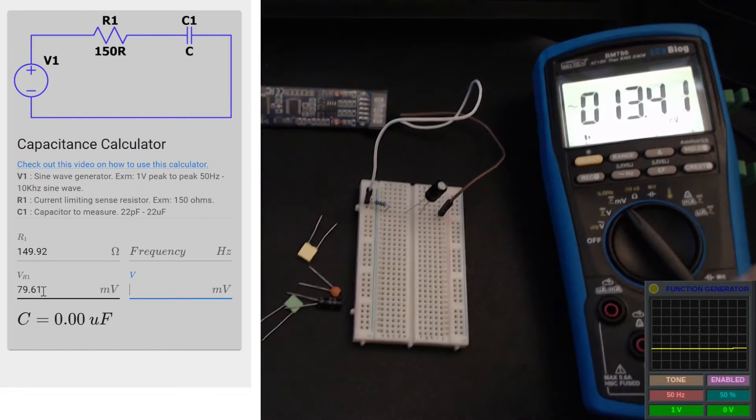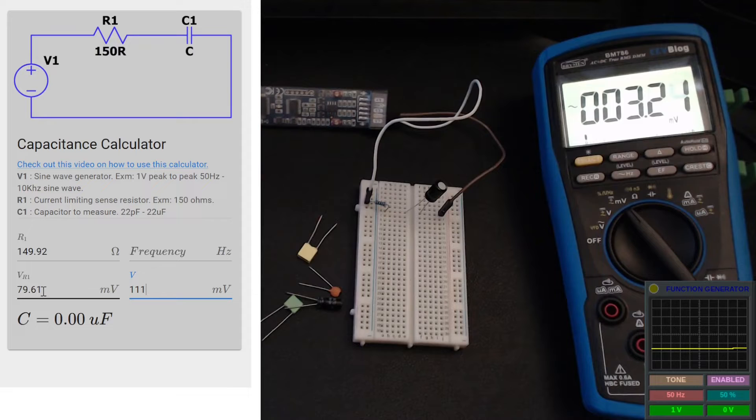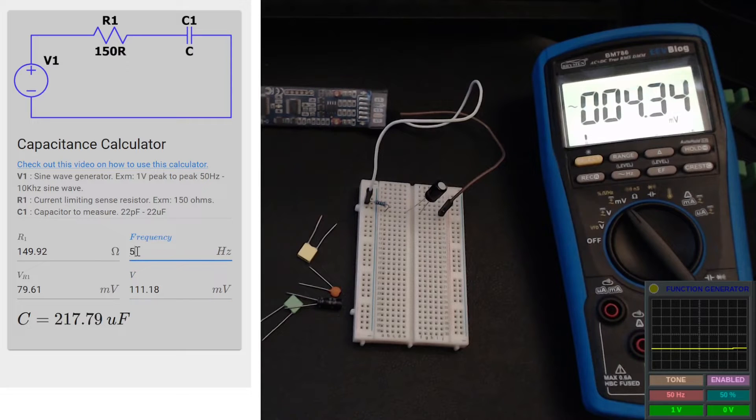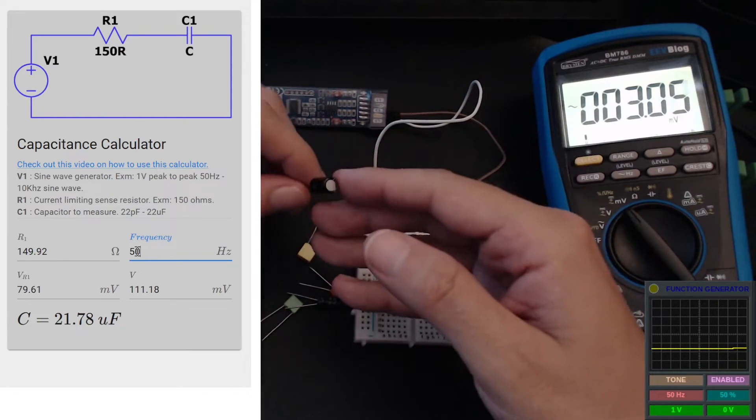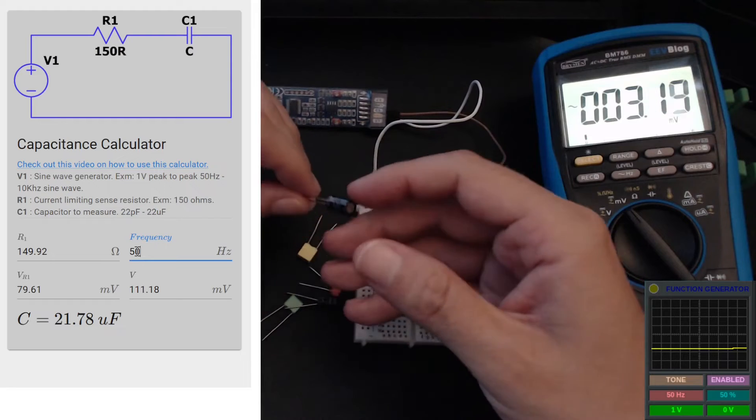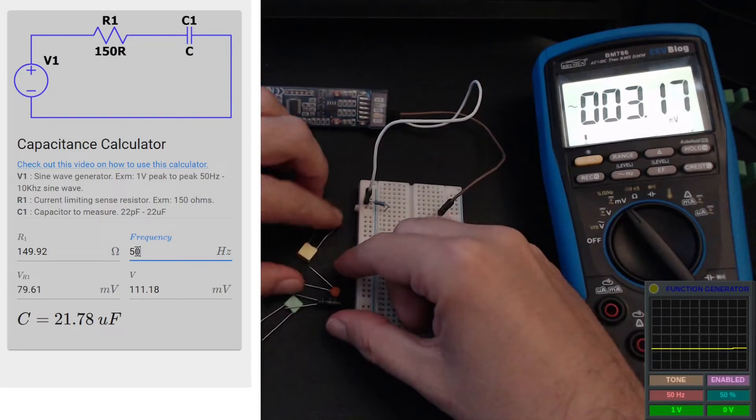Next I want to measure the voltage across the resistor and the capacitor, okay 111.18. And we also obviously need to put the frequency in there which is 50 hertz, and there we go - that's a 21.78 microfarads. It's pretty close, it's within the component tolerances, so I would call this a good reading.